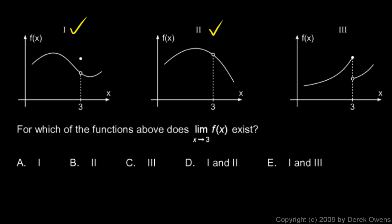And then in number 3, graph number 3 over here, the limit as we approach 3 from the left is one value, and the limit as we approach 3 from the right is another value. So the left and right side limits are not the same, so the limit does not exist there.